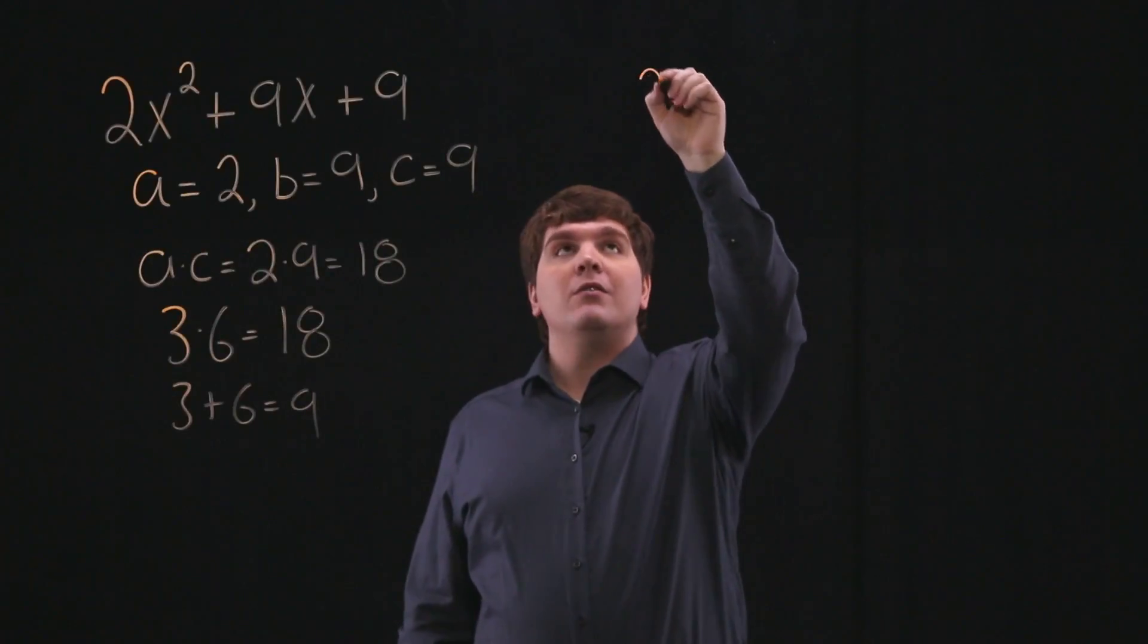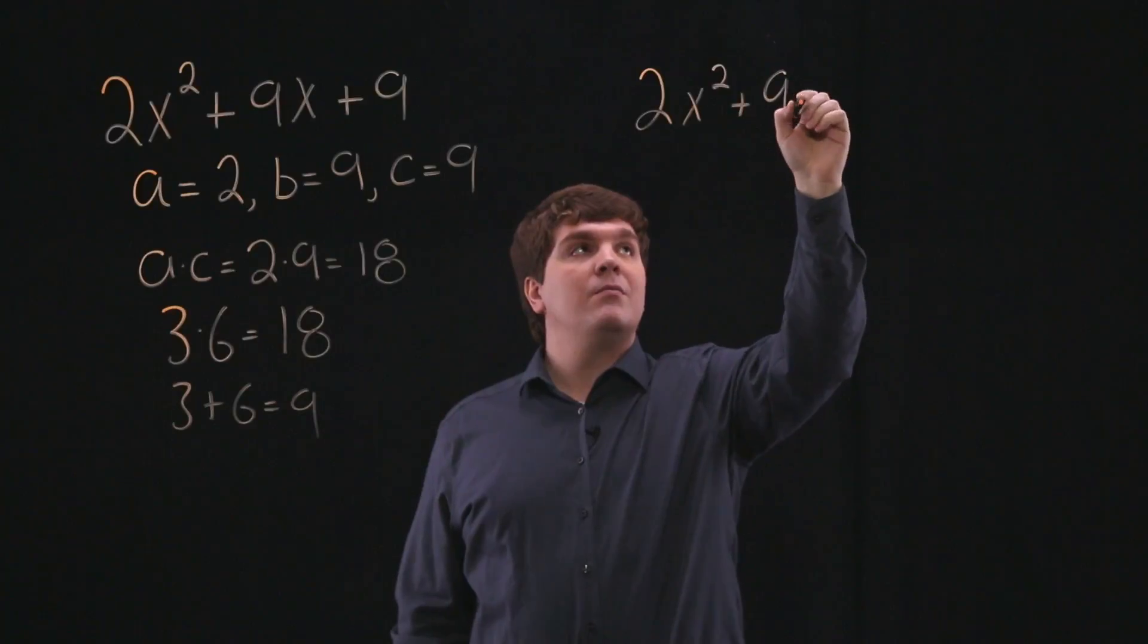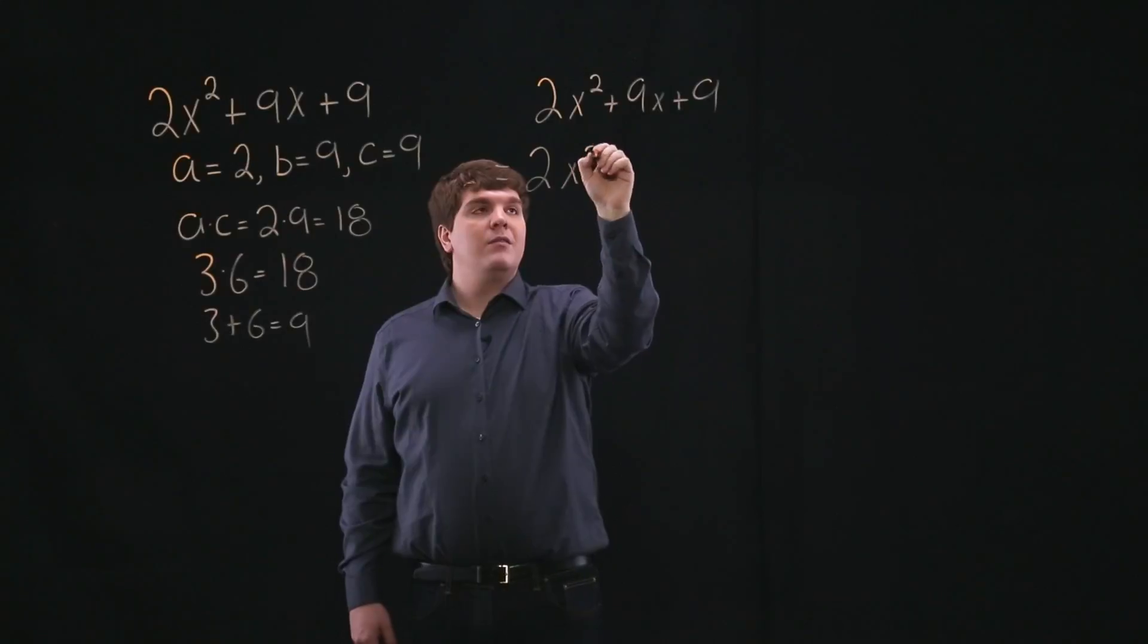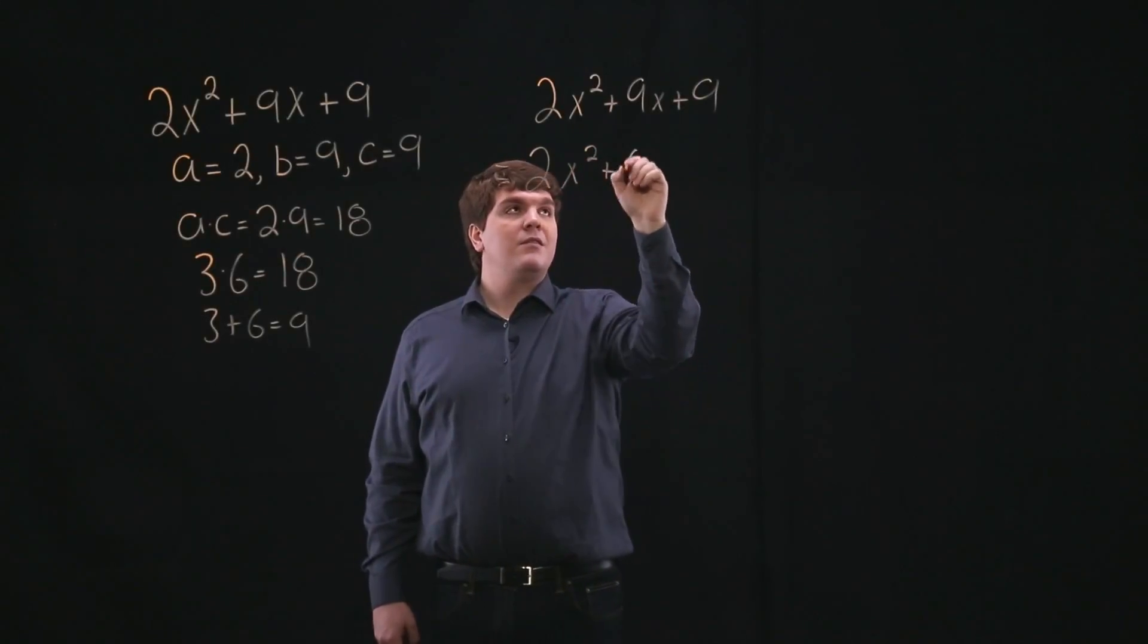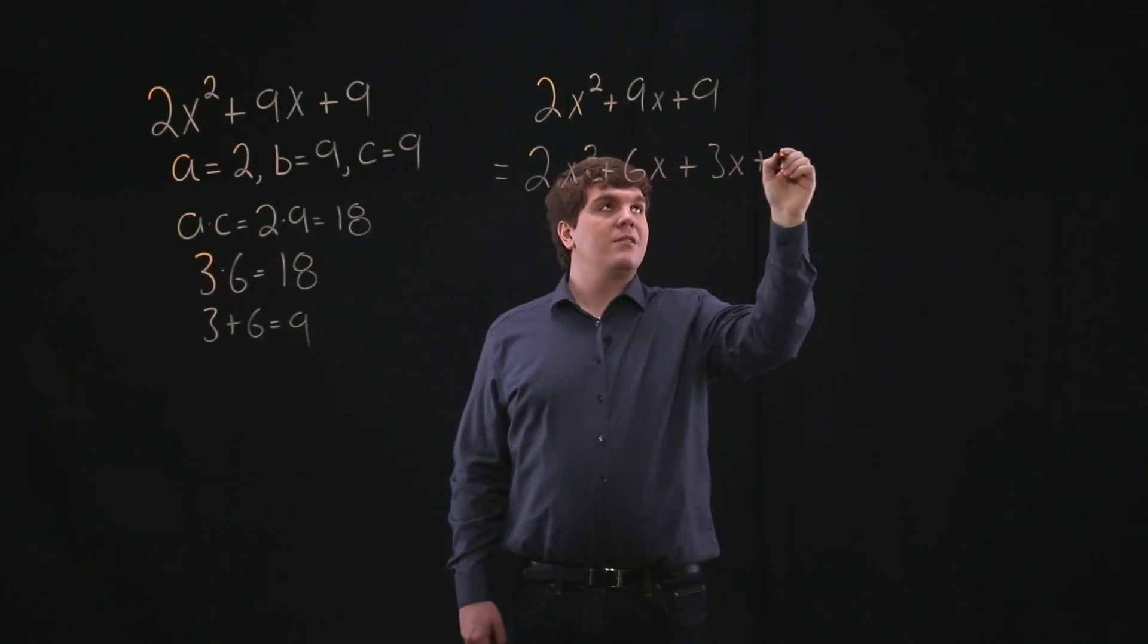So we'll rewrite our polynomial, 2x squared plus 9x plus 9, as 2x squared plus 6x plus 3x plus 9.